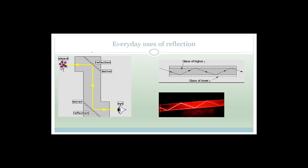Everyday uses of reflection: one is a periscope. The light ray comes from your object, travels in a straight line, hits a mirror or glass prism, gets diverted down to here where it's reflected again into the eye of the beholder. That is an everyday use of reflection. You also get what is called total internal reflection.